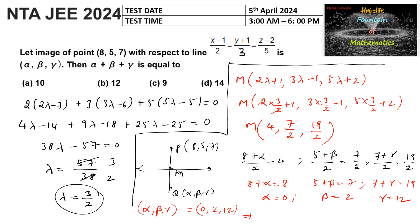Therefore, alpha + beta + gamma = 0 + 2 + 12 = 14. So 14 is the answer, which is option D.